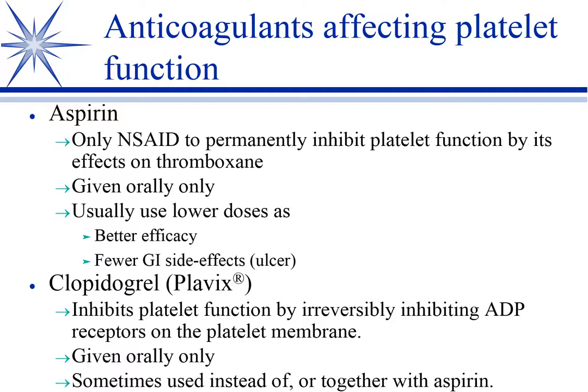In human medicine, they divide clots into red clots and white clots. White clots are primarily platelet in composition and occur mostly on the arterial side. Red clots are mostly on the venous side and are more fibrin, red cells, a whole mix. So in human medicine these anti-platelet drugs are mostly for white clot prevention. We don't draw that distinction — they do affect both sides — but wherever the platelet predominates, this will have the most effect.